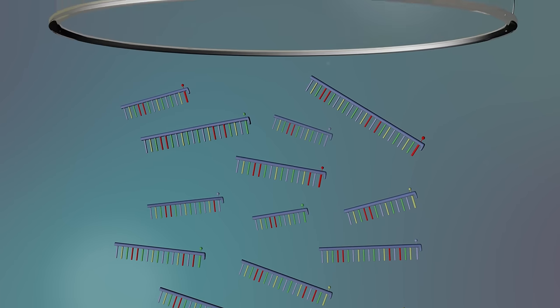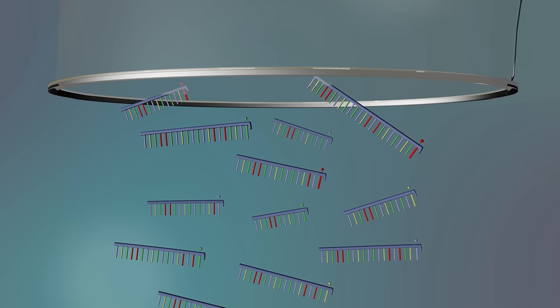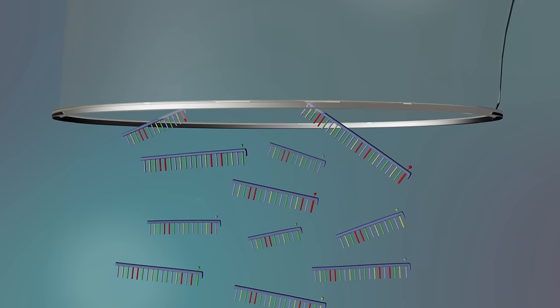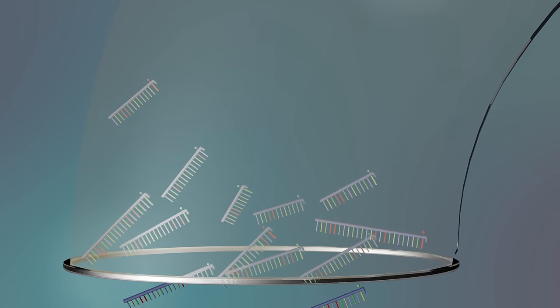A capillary tube is lowered into each well of the plate and an electrical charge is applied. This causes the negatively charged DNA molecules to move through the capillary tube.